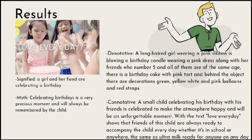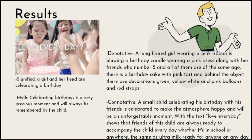The second example is the picture that says 'Love Everyday.' The signified is a girl and her friends celebrating a birthday. The denotative is a long-haired girl wearing a pink ribbon and pink dress, blowing a birthday candle along with her friends. There is a birthday cake with pink tart, and behind the object are green, yellow, white, and pink balloons and red streamers. The connotative meaning: a small child celebrating her birthday with friends to make the atmosphere happy, an unforgettable moment.